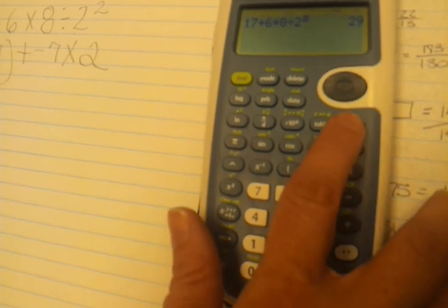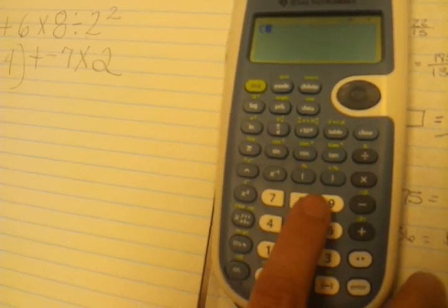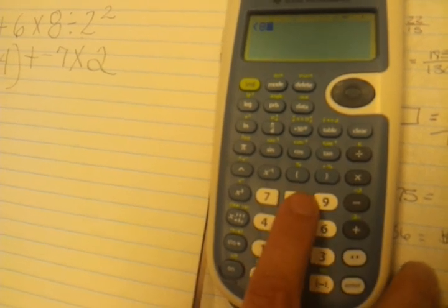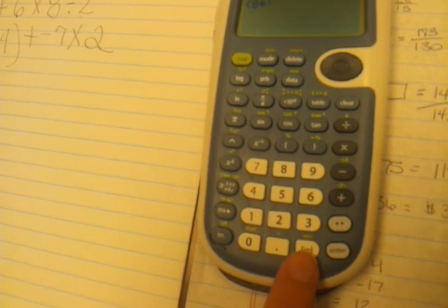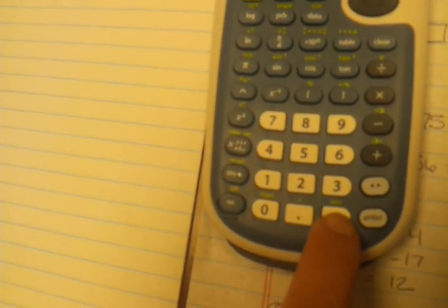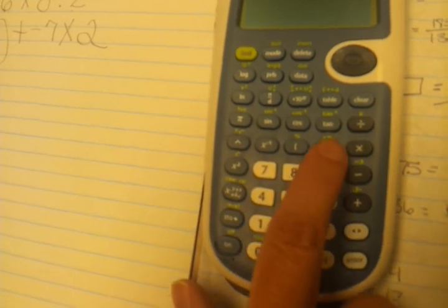So I'm going to start by clearing out my calculator. And then I'm going to open my parentheses, 8 times. And remember from the last lesson, we need to come down here and do the negative number: negative 4. Don't forget to close your parentheses. There, I closed it.